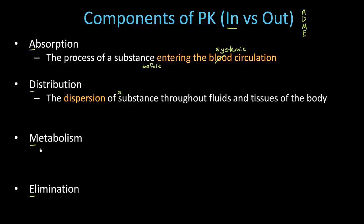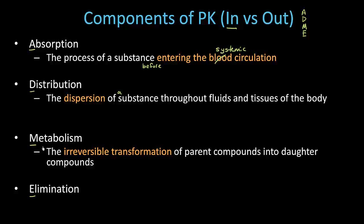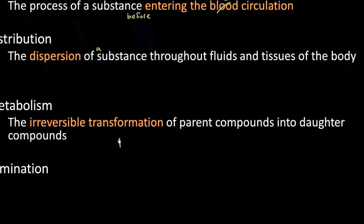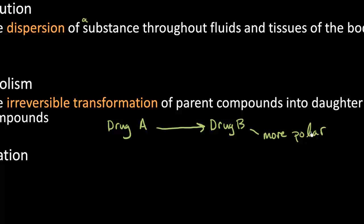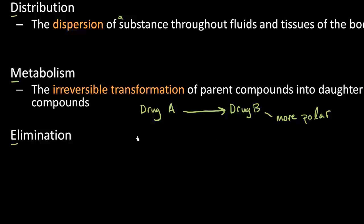So what is metabolism? Here's a definition I do like: metabolism is the irreversible transformation of parent compounds into daughter compounds. Let's say I start with drug A — I transform drug A, the parent, into a very structurally similar daughter compound, drug B. Now this doesn't mean we're actually breaking down the drug. In pharmacology, it's actually the opposite. Many times we don't break down the drug but we add something to it — one or two molecules — and the reason we do that is to make it more polar. The reason we make it more polar is to help us eliminate it.